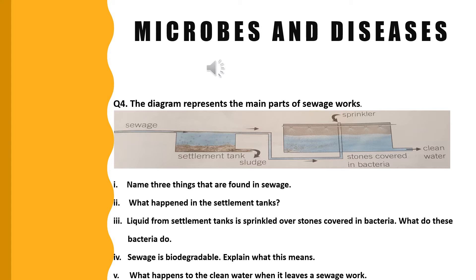The next question is: Sewage is biodegradable – explain what this means. Biodegradable substances are those which can be decomposed by the action of microorganisms. Sewage mostly contains substances which are biodegradable, like human waste, water from washing, etc.